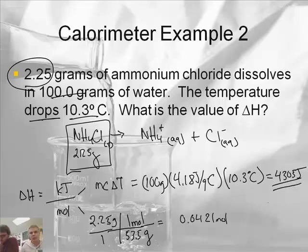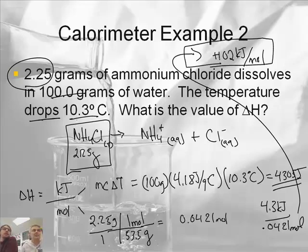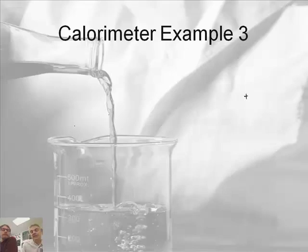So to find delta H, it'll be the kilojoules. And the kilojoules will be 4.3 kilojoules, I divided by 1,000, divided by 0.0421 moles. And we get 102 kilojoules per mole. Now, that one will be positive, Mr. Sams. Right, because it's endothermic. Because it's endothermic, because it dropped the temperature in 10.3 degrees. All right. Okay, so it's just like the other problem, except kind of doing an endothermic example. And the last example is the trickiest one.